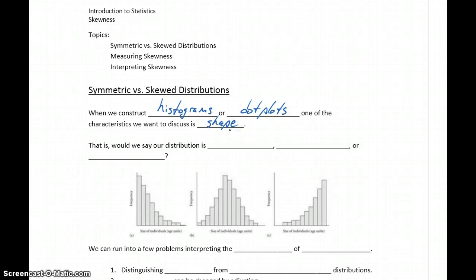We also talked about center, spread, and outliers, but for right now we just want to focus on that idea of the shape of our distribution, of the shape of that graph.